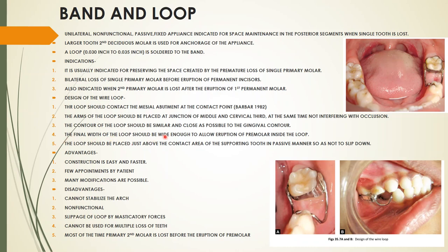The final width of the loop should be wide enough to allow eruption of the premolar within the space created. The loop should be placed just above the contact area of the supporting tooth in a passive manner so as not to slip down. It should not exert any pressure or force on the abutment tooth.